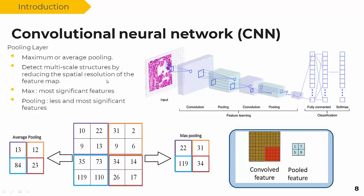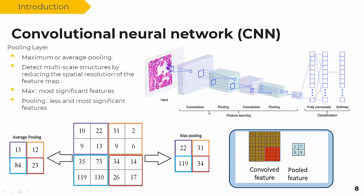The second important layer in convolutional neural networks is the pooling layer, which usually comes after the convolutional layer and is responsible for downsampling. There are two important types: average pooling, which takes the average of the window, and maximum pooling, which takes the maximum value. At the end there is a fully connected layer followed by softmax. It is worth mentioning that convolution is usually combined with activation functions such as rectified linear unit (ReLU), sigmoid, or tanh to speed up the process and reduce complexity.